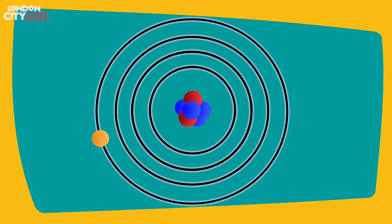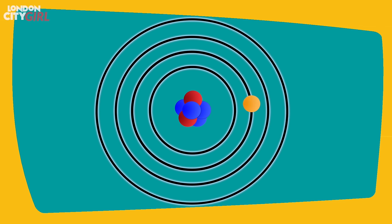This is called the quantum leap. In essence, there are places within the atom that the electron will be likely to be and other places where they won't, as energy is being absorbed and released in discrete units.